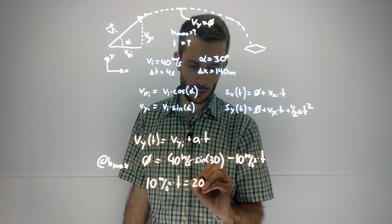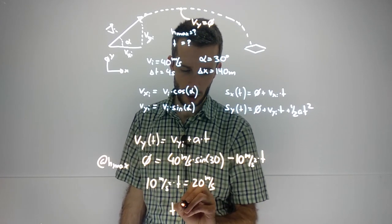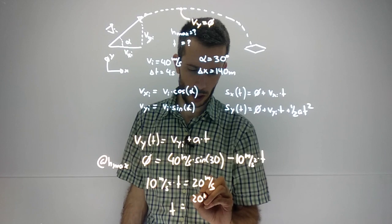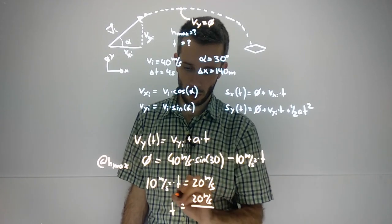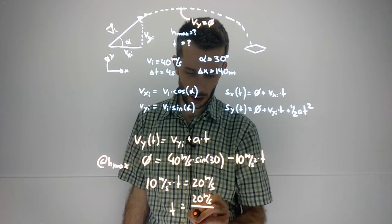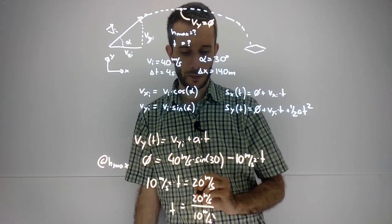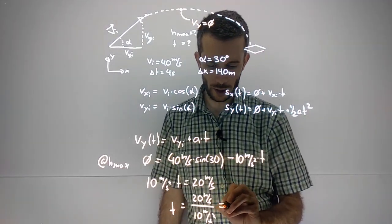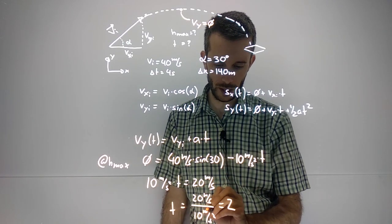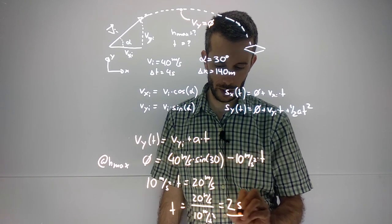So time is 20 meters per second over 10 meters per second squared, which gives me 2 seconds.